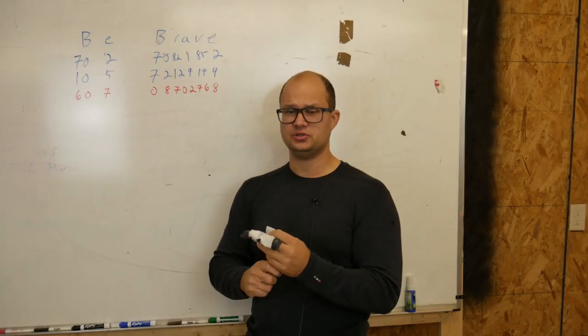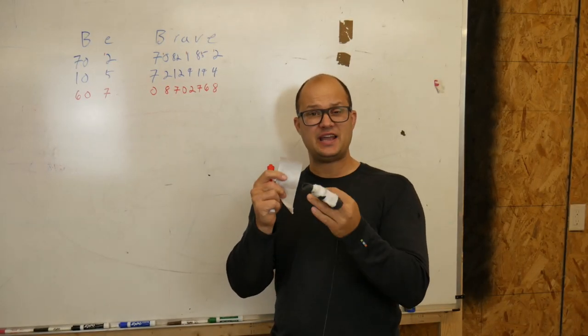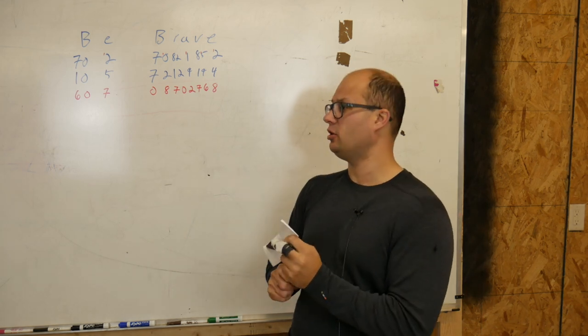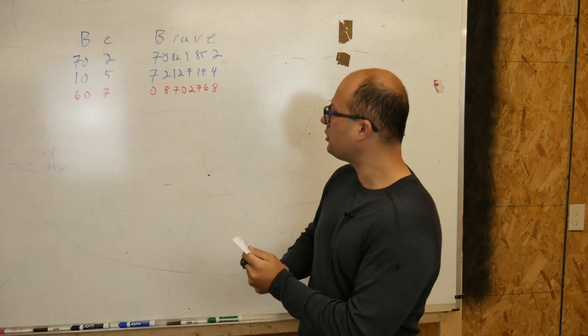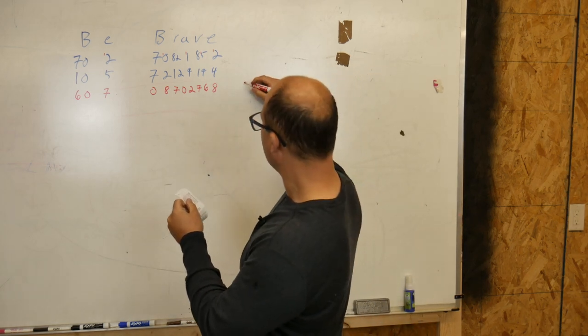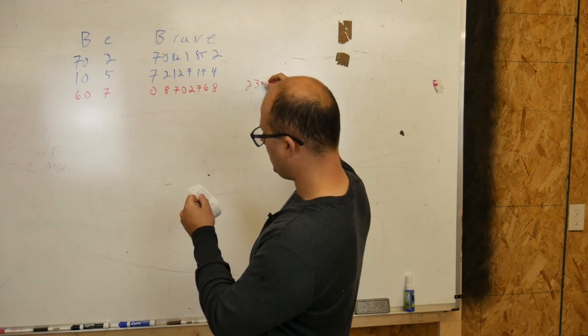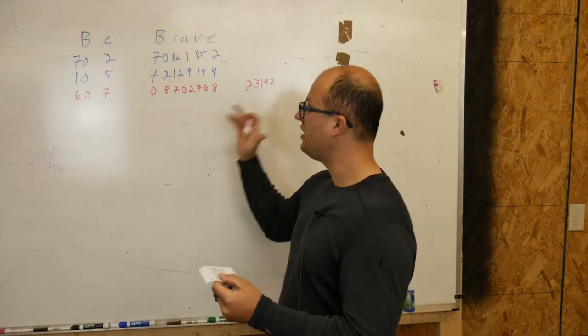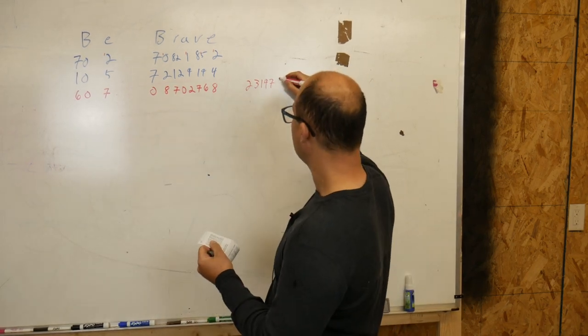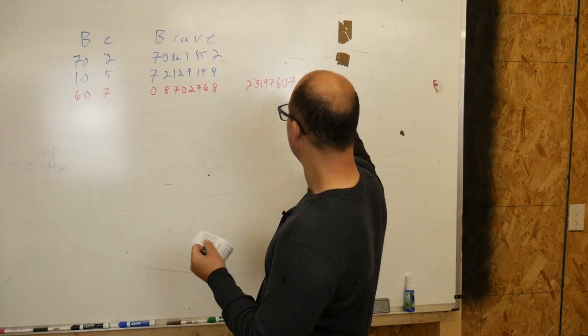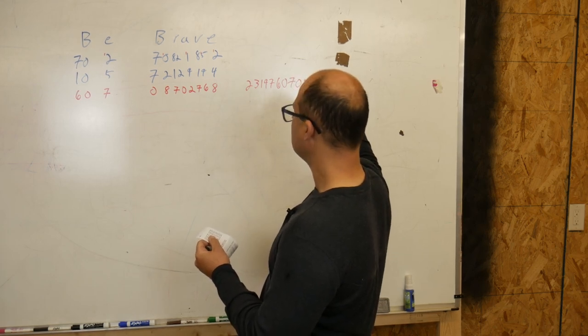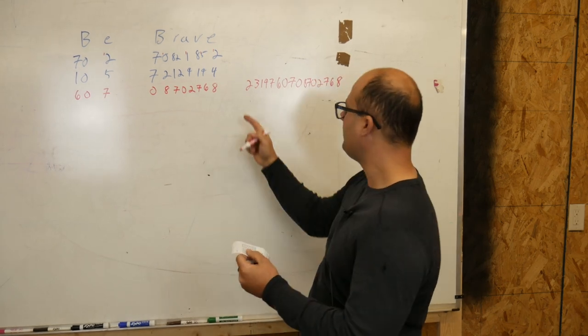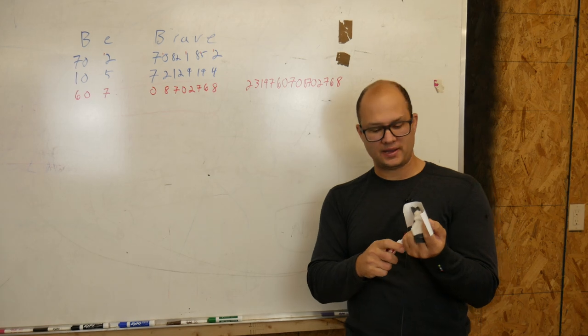So, now that we're going to send the message, we're going to include this two-three-one-nine-seven, these first five digits. We're going to include those in our transmission. And the reason we're going to include those is so that, again, if I have ten of these, I know which pad to use in order to encode and decode that message. So, our encoded message, our final encoded message would look like this. It would look two-three-one-nine-seven.